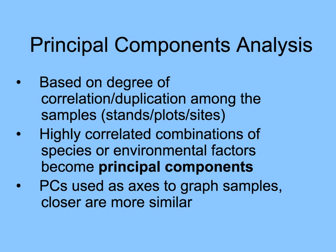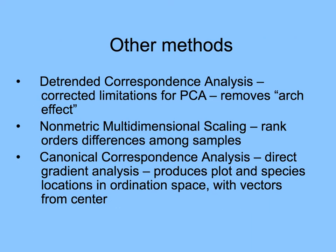The closer things come out in the diagram, the more similar they are. With non-metric multidimensional scaling, we get rank orders of differences among samples. There's also detrended correspondence analysis, which corrects what some ecologists perceive as the limitations of principal components analysis — where sites form an arch — by flattening that out. And then there's canonical correspondence analysis, a direct gradient analysis that makes a plot in an ordination space with vectors from the center showing their distances.